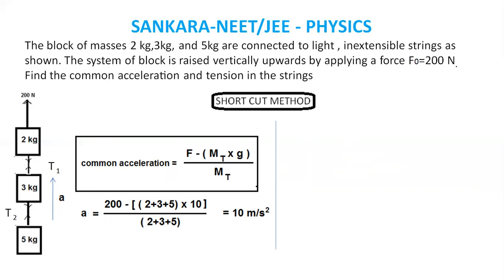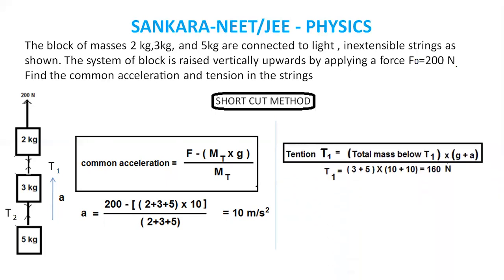For tension T1, total mass below T1 is 3 kg and 5 kg. T1 equals total mass below T1 times g plus a. That is 3 plus 5 into 10 plus 10 equals 160 Newton.